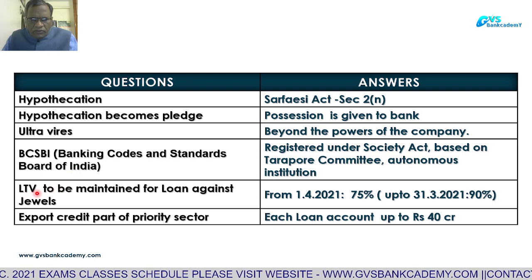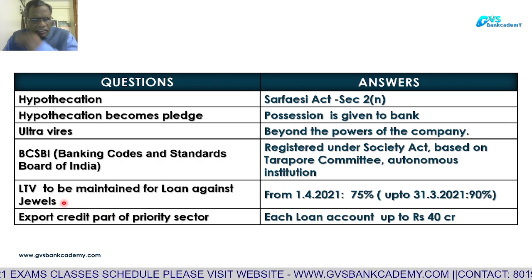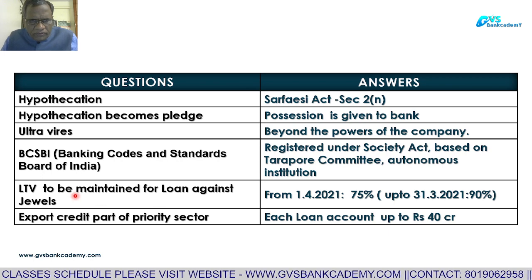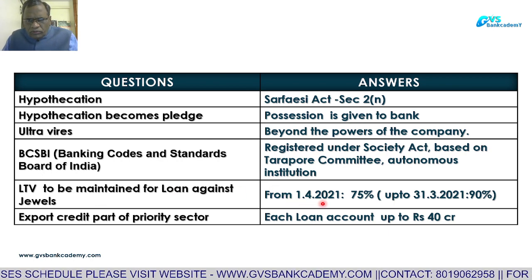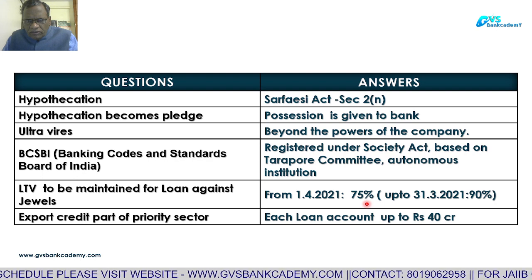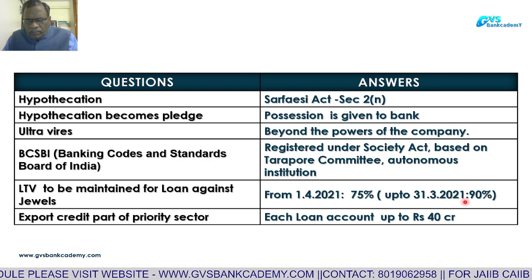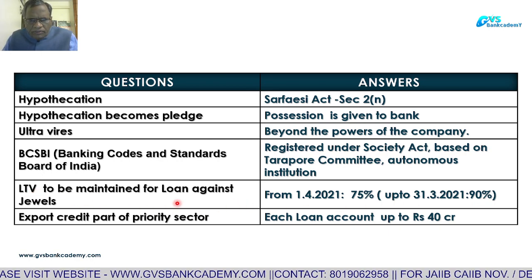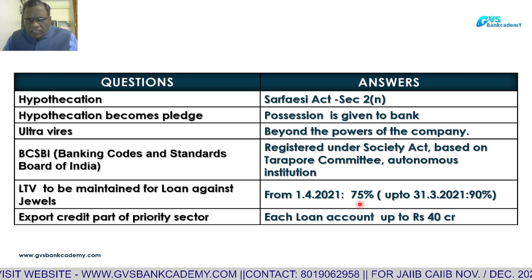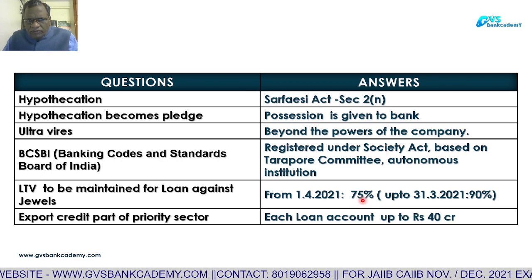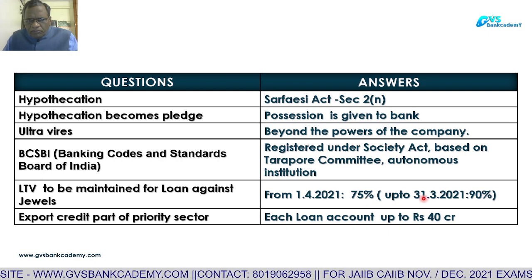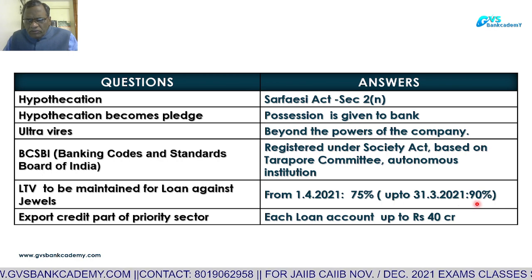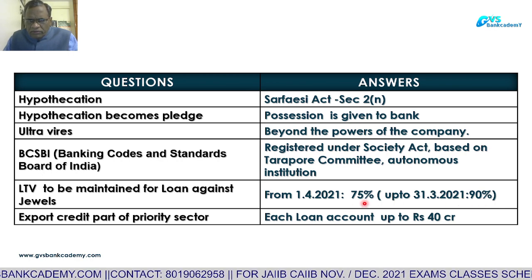LTV — Loan-to-Value ratio to be maintained for loans against gold. From 1st April 2021, the LTV ratio is 75%. Up to 31st March 2021, it was 90% due to COVID conditions. So presently banks are permitted to give loans only up to 75% of the value of gold — i.e., against 100 rupees worth of gold, the bank can lend only 75 rupees.